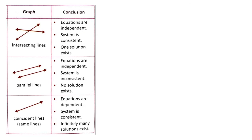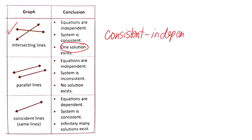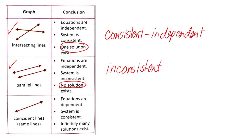Let's summarize. If you're given intersecting lines, how many solutions are there? Only one. And what kind of system is this? Consistent, independent. For parallel lines, how many solutions? None — the system is inconsistent. For coinciding lines, how many solutions? Infinitely many.